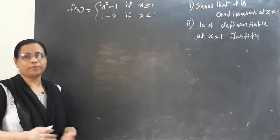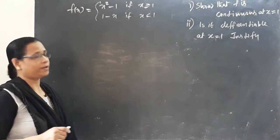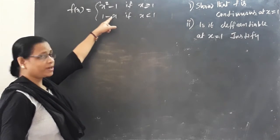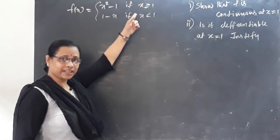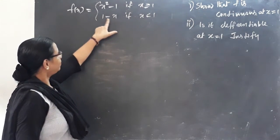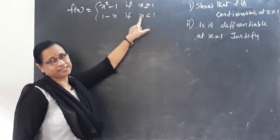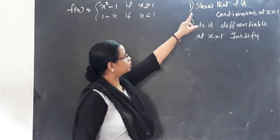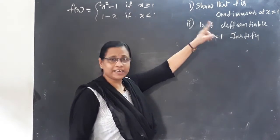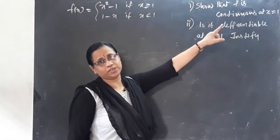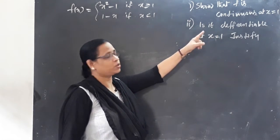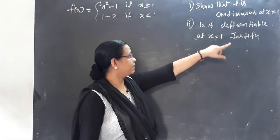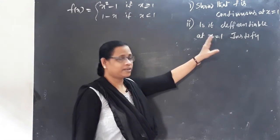Now let's look at a differentiability problem. Given f(x) equals x squared minus 1 if x is greater than or equal to 1, and 1 minus x if x is less than 1. First, show that f is continuous at x equal to 1. Second, is it differentiable at x equal to 1? Justify.